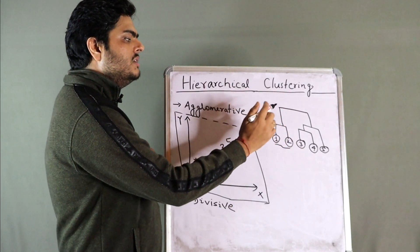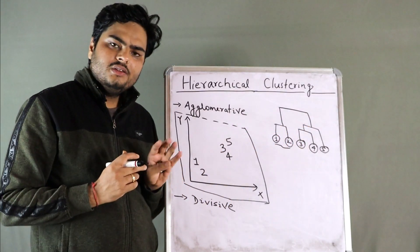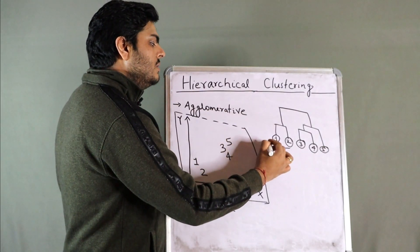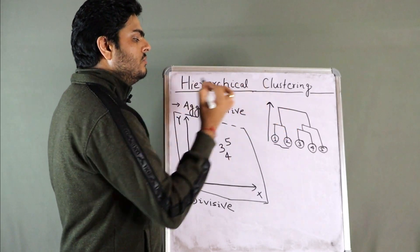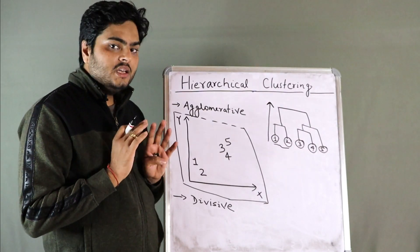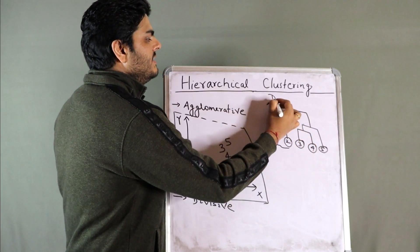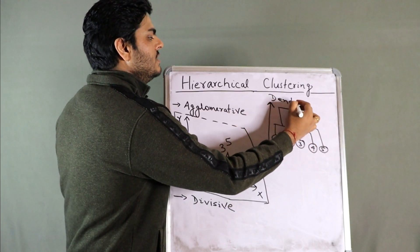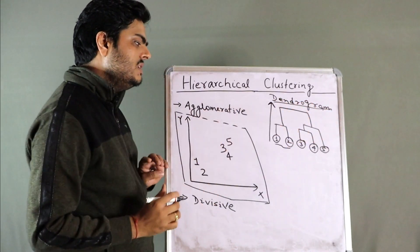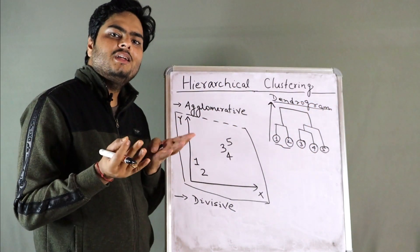Here a hierarchy is present. This is, for example, level zero, level one, level two — this is a hierarchy. Another thing to note is that it is a bottom-up approach, which means we started from the bottom and moved up. Also, this diagram you see here is known as a dendrogram. If somebody asks you what is a dendrogram, it is this diagram representing different levels in the hierarchy of clusters.